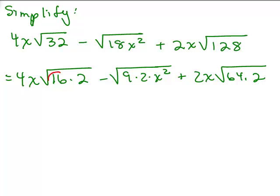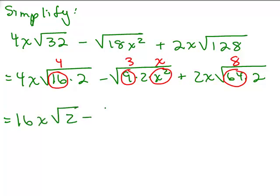So I could pull out of the first one a 4. For the second one I could pull out a 3 and an x, because that's the square root of x squared. Remember, we're assuming all variables are positive. And I could pull out an 8. So what does that give me? 4 times 4 times x, that's 16x square root of 2, minus 3x square root of 2, plus 2x times 8, 16x square root of 2.